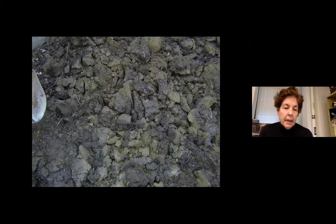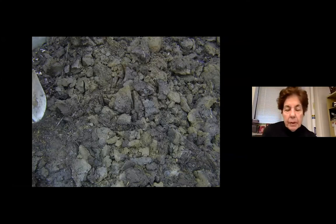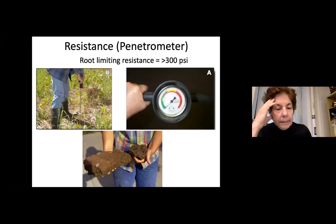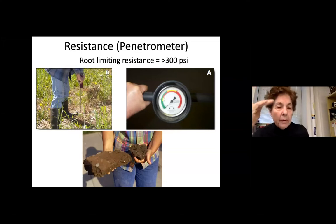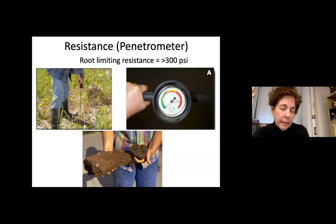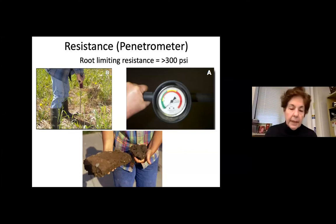Blue-gray soil indicates no oxygen and poor drainage. We use a penetrometer as a simple field measurement to assess rooting depth potential. There is a correlation between penetrometer resistance and root growth: above 200 PSI roots really do not like to grow in that dense soil. We look for 0 to 200 PSI. Anything above that indicates too-dense soil for plant growth.